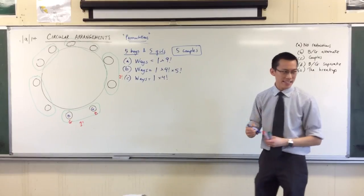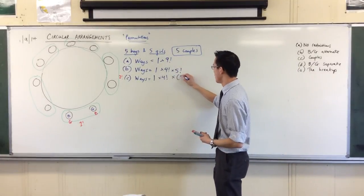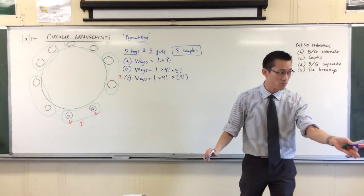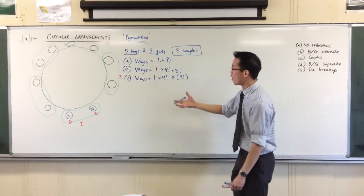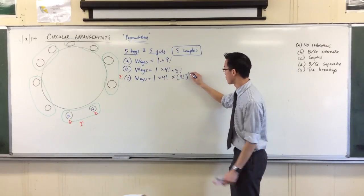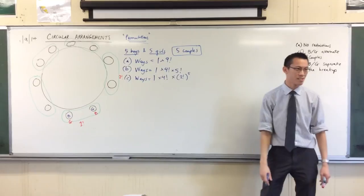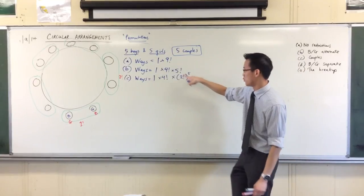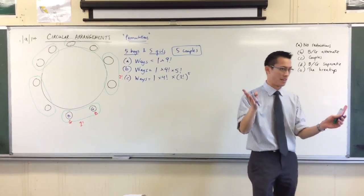So in fact, I have undercounted by a factor of two factorial, which is just two, to the power of, well, how many couples are there? And the answer is five. So it'll be 32 times 24, whatever that is.